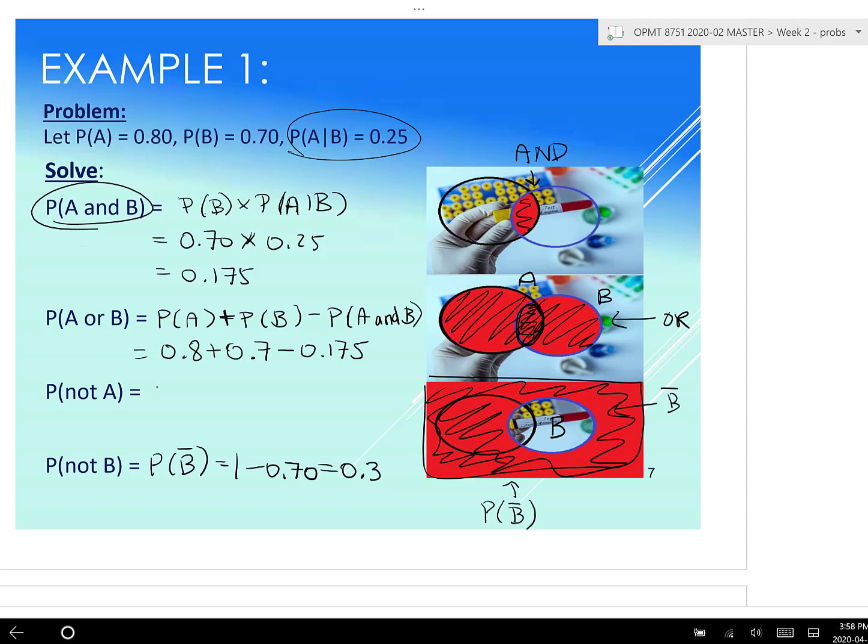Okay, if we want the probability of not A, then we just do, again, we can write it this way, we just do one minus the probability of A. So 1 minus the 0.8, which gives 0.2. Okay. Now next example, we're going to do one quite similar.